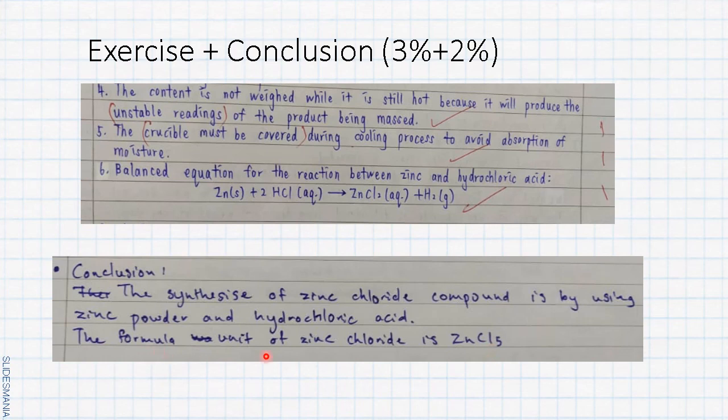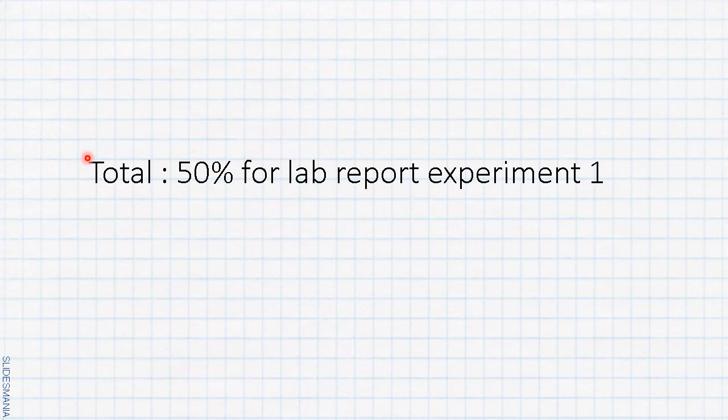There are some errors, so it doesn't matter for you to state the wrong molecular formula. Experiment 1 lab report full mark is 50 percent. So how many marks did you get? No worry, this one is just a practice to learn how to write a proper lab report.